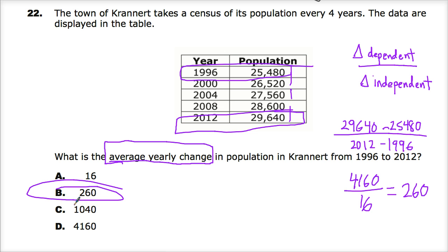The key itself identifies C as the answer, which doesn't really make much sense until you realize that for some reason there's been a mistake. That's the distance between individual population census — the change in population between each census. So if you do 26,520 minus 25,480, that gives you 1040. But that's not what the question is asking. It wants to know the average rate of change for each year. If it was saying what's the average census change, then you could say that's how much change is in general between each census.